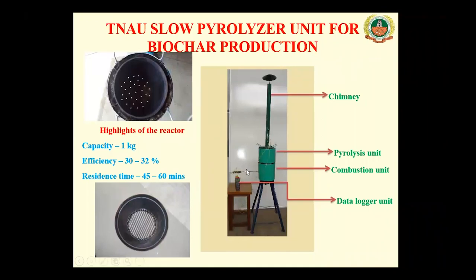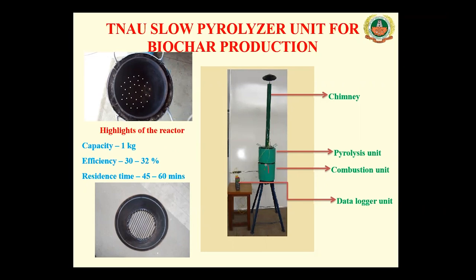Here is an example of a small unit for producing biochar from agro-residues. There are two zones: a combustion zone and a pyrolysis zone where the material to be charred is kept. Heat produced in the combustion zone is transferred to the pyrolysis zone — indirect heating with no air entering. Whatever volatile matter is released during the process escapes through the chimney. Initially you get white smoke; once the smoke stops, that indicates the process is over.